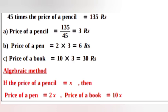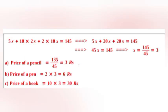Algebraic method: If the price of a pencil is X, then price of a pen equals 2X and price of a book equals 10X. So 5X plus 10 times 2X plus 2 times 10X equals Rs. 135, giving 5X plus 20X plus 20X equals 45X equals Rs. 135, therefore X equals Rs. 3.